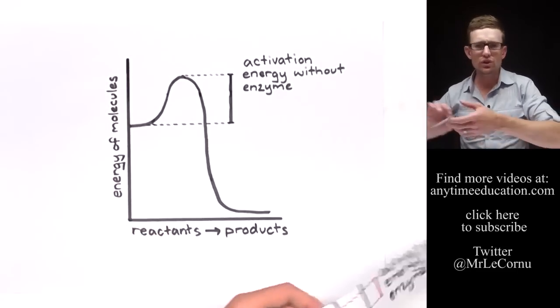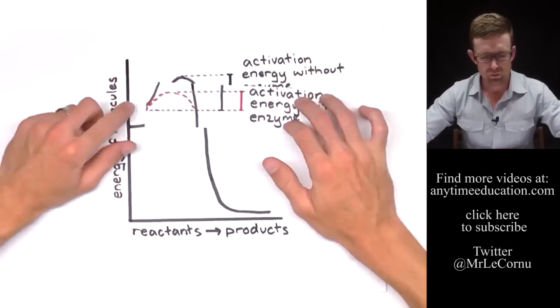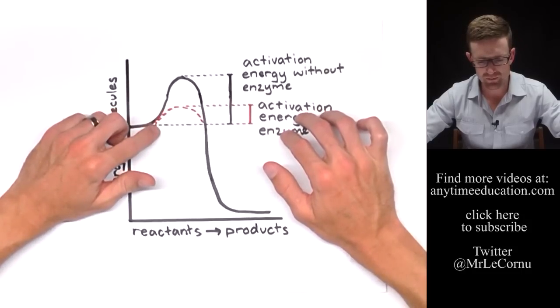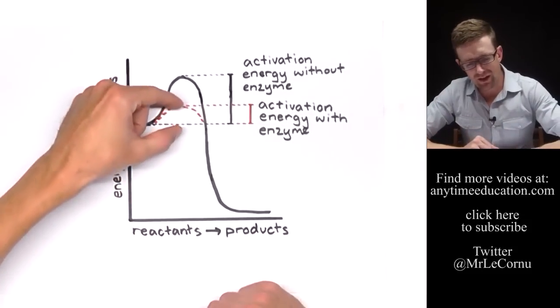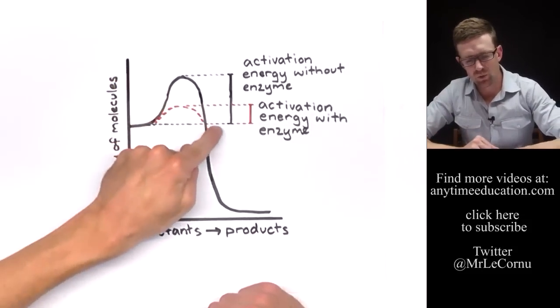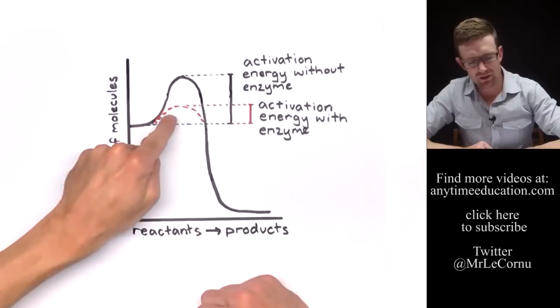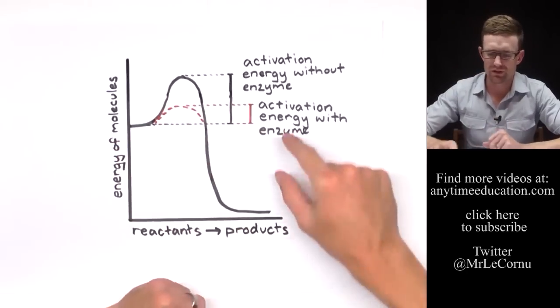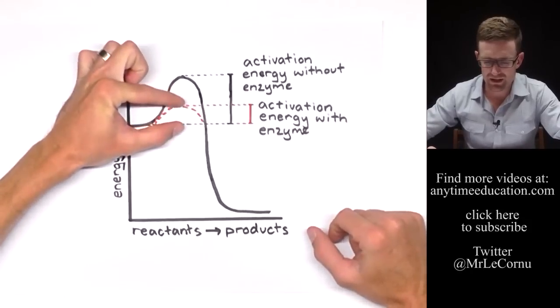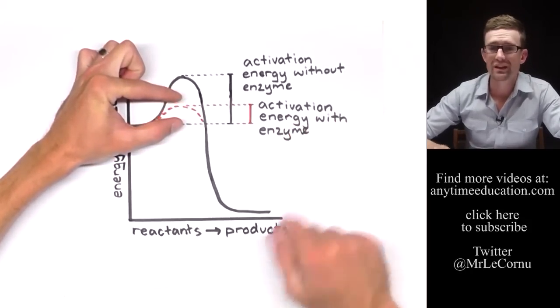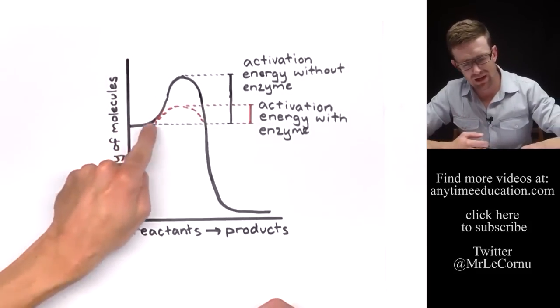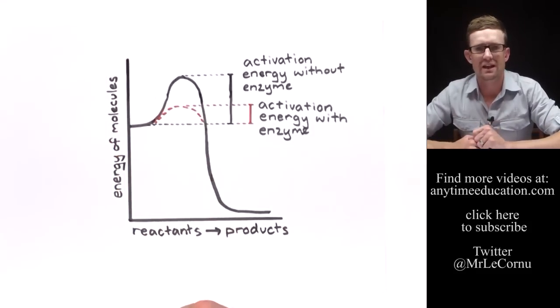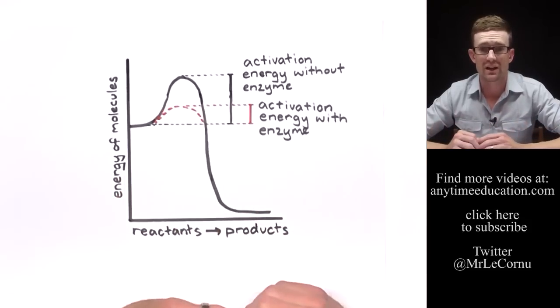However when we use an enzyme, the amount of activation energy that's required is going to be a lot less. It's going to be a lot easier for this reaction to occur. So here, this amount here, this is our activation energy with an enzyme. So you can see that when we have an enzyme present the chemical reaction is a lot more likely to take place and that is why enzymes are able to speed up chemical reactions.